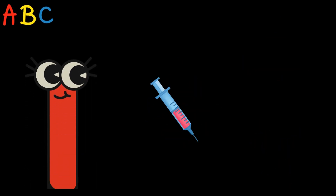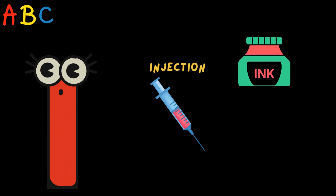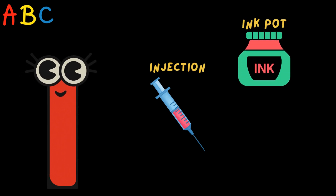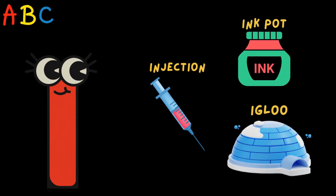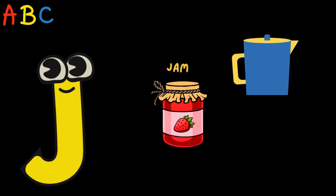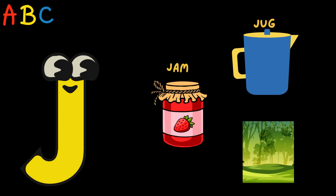I is for Injection, Ink Pot, Igloo. J is for Jam, Jug, Jungle.